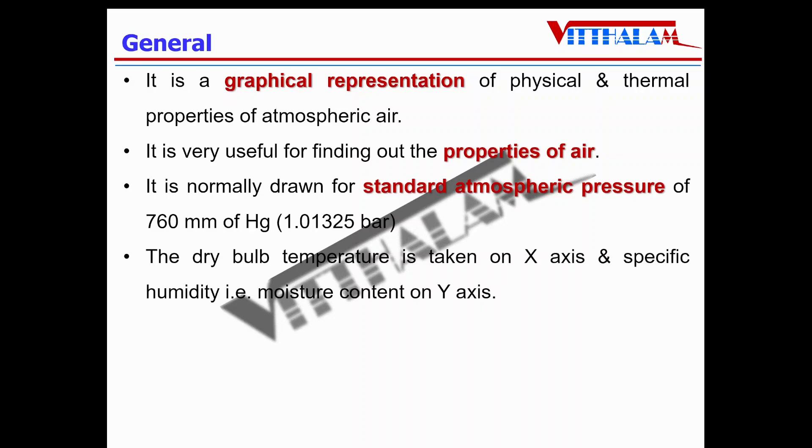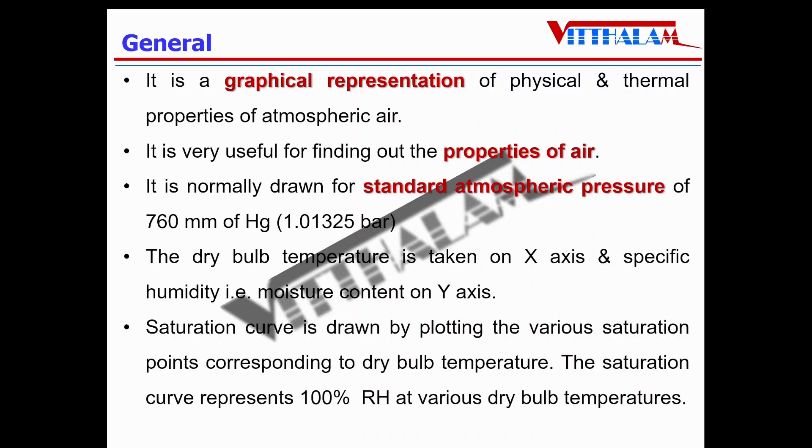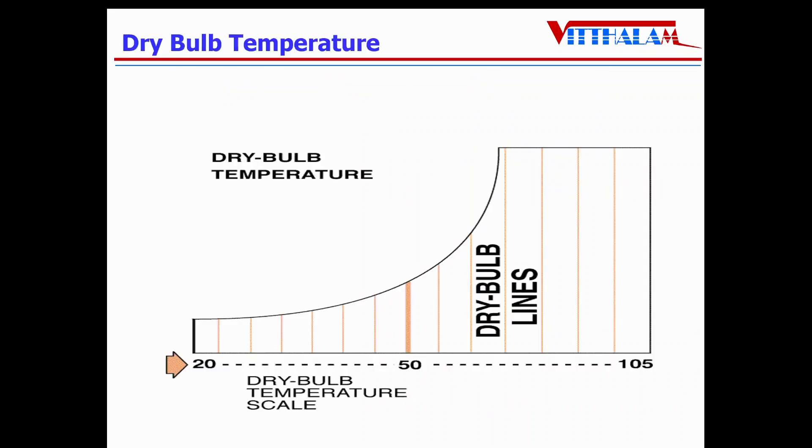Boundaries of the psychrometric chart are dry bulb temperature on the x-axis, specific humidity that is moisture content on the y-axis, while the saturation curve that is 100% RH is drawn by plotting the various saturation points corresponding to dry bulb temperatures. This saturation curve is an upper boundary representing saturated air or 100% moisture holding capacity at various dry bulb temperatures. The curve looks like this - dry bulb temperature is on x-axis while specific humidity that is moisture content is on y-axis.